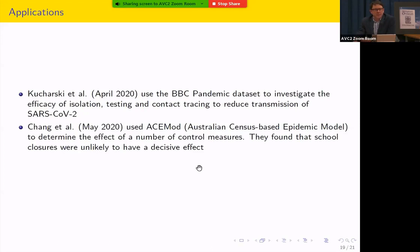And so I'm just jumping to the second point here. The Australian census-based epidemic model has been up and running for quite some time. It's been used in the past with flu. And this was used in May to understand the effect of a number of control measures for COVID-19. And they found out that school closures were unlikely to have a decisive effect because they found that, based on data, that it seemed that children were not important vectors of the disease. And then I'll mention Kucharski et al., which is another interesting one, which was already developed a few years ago, on the BBC pandemic dataset where volunteers agreed to install an app on their phone, which used Bluetooth to notice when it came in close contact with someone else using the app. And they used this to understand the efficacy of isolation and various other control measures to reduce transmission of SARS coronavirus 2.